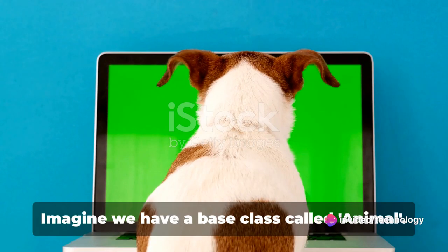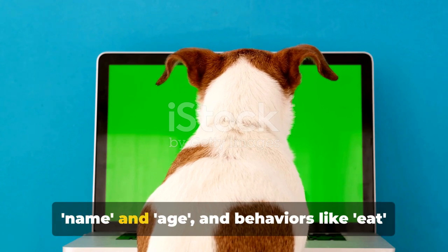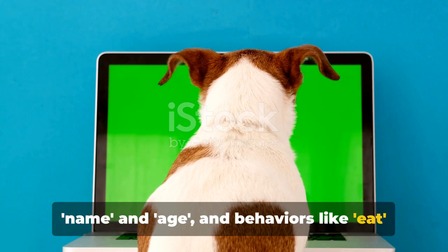Let's consider an example. Imagine we have a base class called Animal. This class may have attributes like name and age and behaviors like eat and sleep.